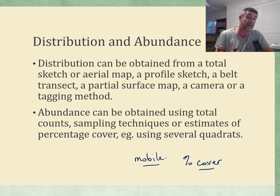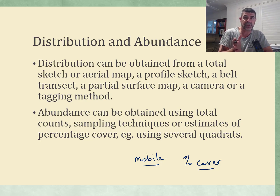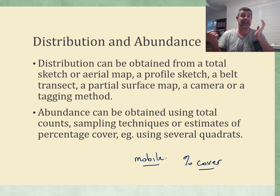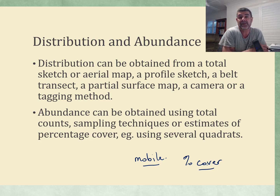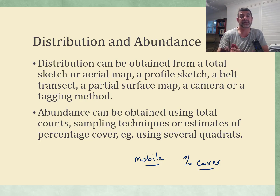For distribution, techniques include total sketches or aerial maps. Drones have been a fantastic tool for ecologists to get a bird's eye view of what's going on. Profile sketches, belt transects, and line transects — which we used for our rock platform study — are also used, where a belt transect extends a line transect by about a metre on each side. Partial surface mapping, cameras set up to record over time, and tagging methods are further tools for identifying the distribution of organisms within an ecosystem.